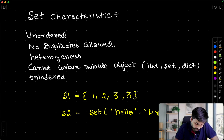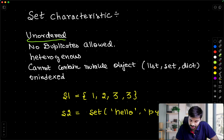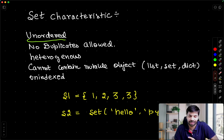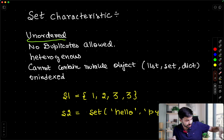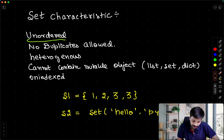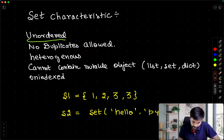Since sets are unordered, indexing and slicing both will fail. If you cannot say which element is first, then you also cannot slice from first to second. Duplicates are not allowed — we have already seen this.